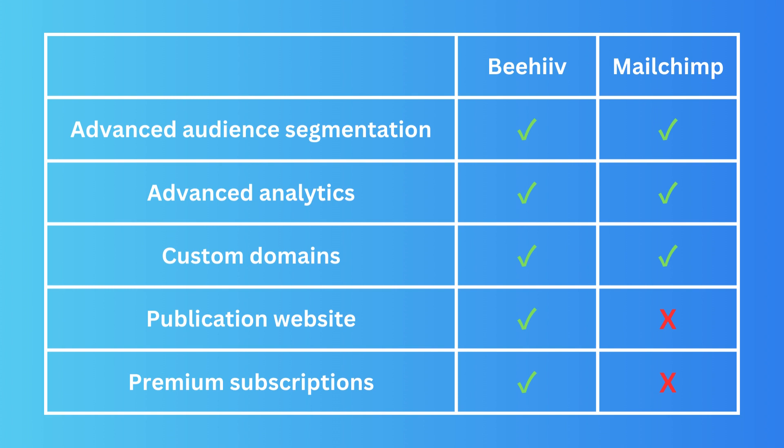Custom domains are available in pretty much every email marketing software and are available on both platforms. A publication website, however, is not available within Mailchimp. When you look at platforms like Substack or Beehiiv, having a publication website is a really important feature.